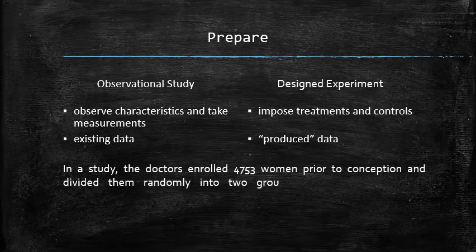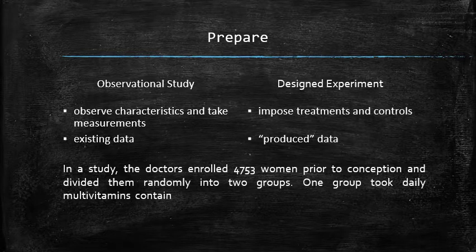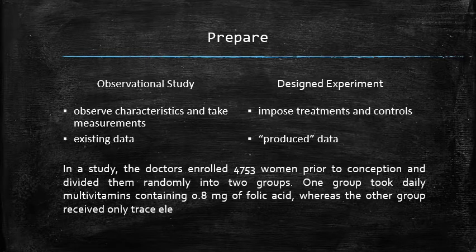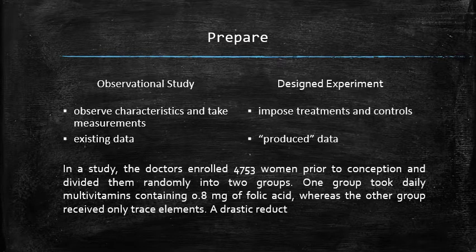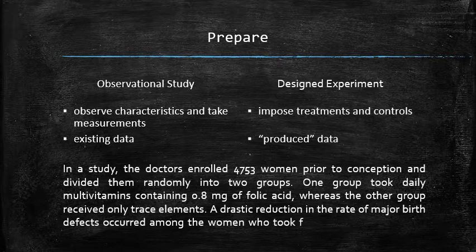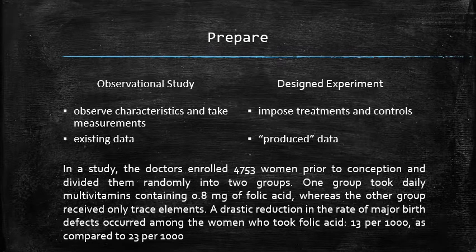One group took daily multivitamins containing 0.8 mg of folic acid, whereas the other group received only trace elements. A drastic reduction in the rate of major birth defects occurred among the women who took folic acid, 13 per 1,000, as compared to 23 per 1,000 for those women who did not take folic acid.